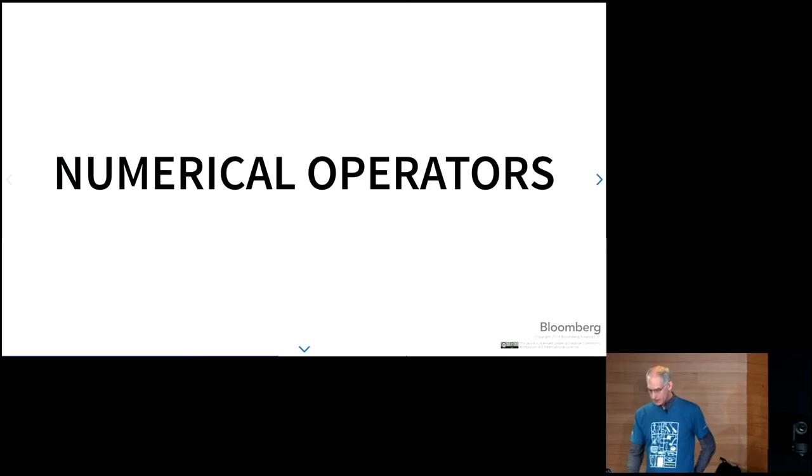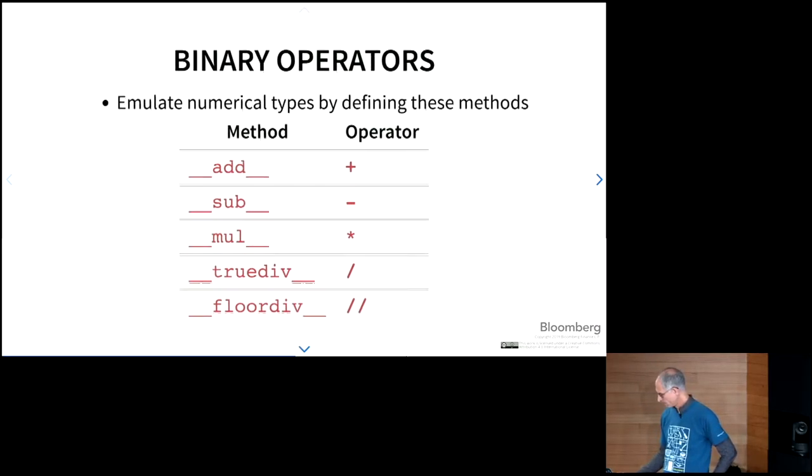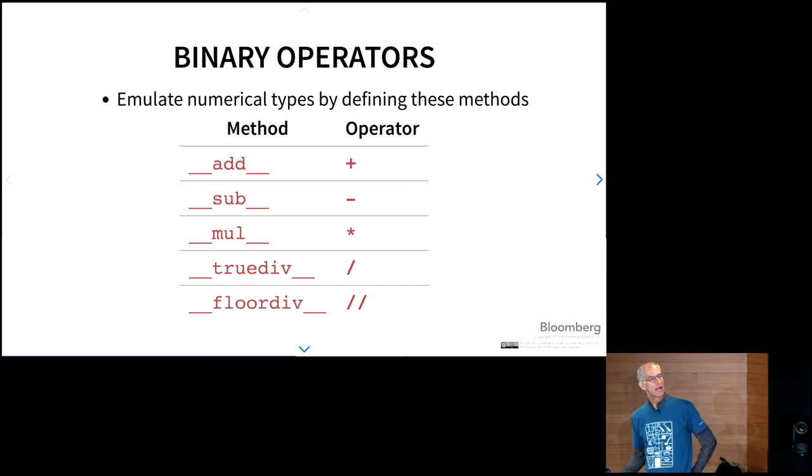Next up are the numerical operators. This allows you to emulate numerical types by defining these methods. So they're the operators, the plus, minus, star, single slash, and double slash. We're talking strictly Python 3 here. And those dispatch to Dunder add, Dunder sub, Dunder mul, Dunder true div, which is true division, versus Dunder floor div, which is basically the integer style division.